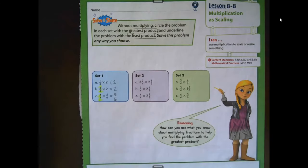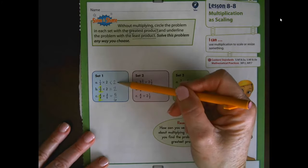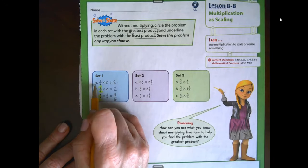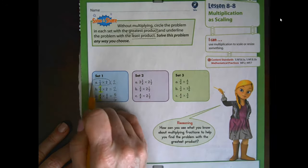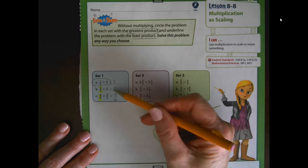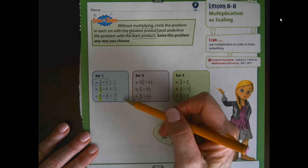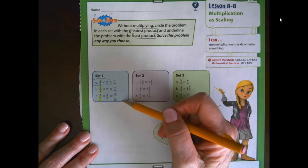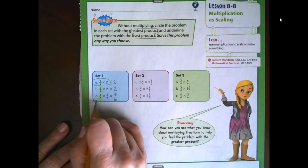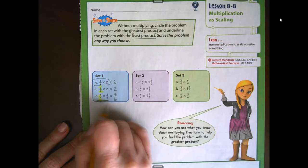So looking at these, the expression with the greatest value would be a product greater than two — that is one-half times two, which yields the greatest product. These two expressions give known products, and the one with the least value is the proper fraction five-sixths. So we're going to underline that expression.